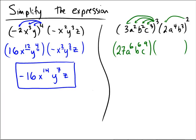Then for the second group: 2 squared is 4, a to the 4th squared is a to the 8th, and b cubed squared is b to the 6th. Altogether, 27 times 4 is 108. a to the 6th times a to the 8th is a to the 14th. b to the 6th times b to the 6th is b to the 12th. And finally c to the power of 9.